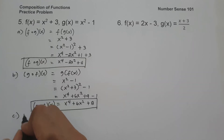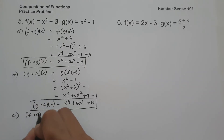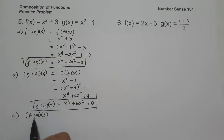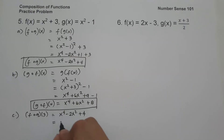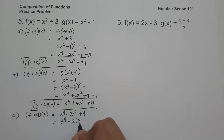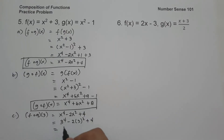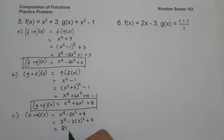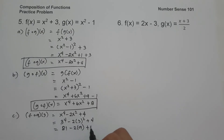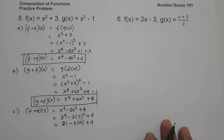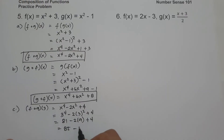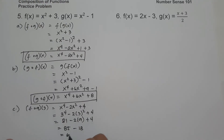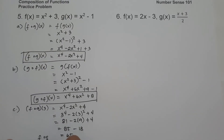On letter c, let us have f circle of g of 3. Since f circle of g of x is x to the 4th minus 2x squared plus 4, all we have to do is substitute x equals 3. So this will be 3 to the 4th minus 2 times 3 squared plus 4. 3 to the 4th is 81, and 2 times 9 is 18. So we have 81 minus 18 plus 4, which gives us 85 minus 18, and that is 67. And this is the value of f circle of g of 3.